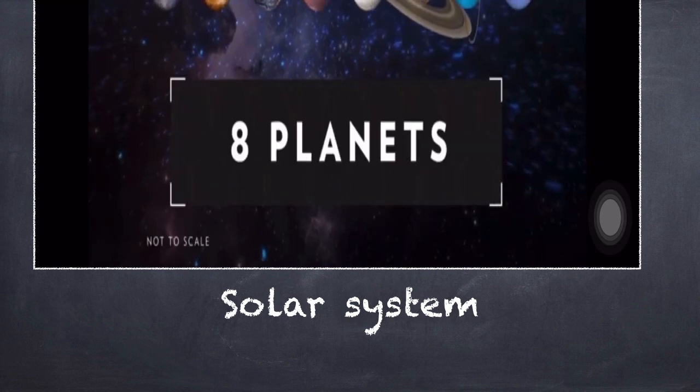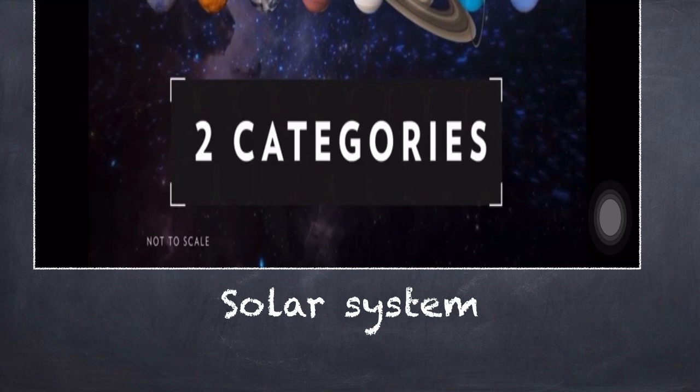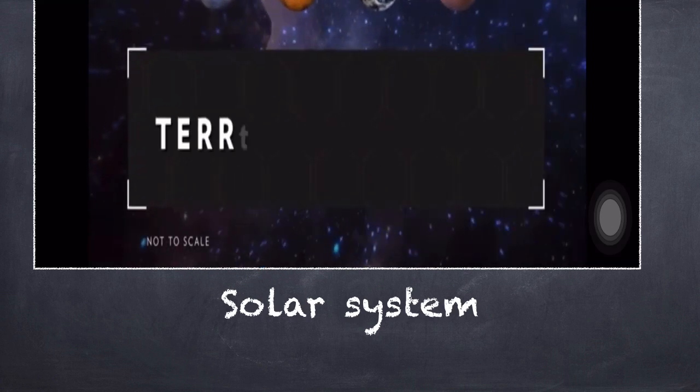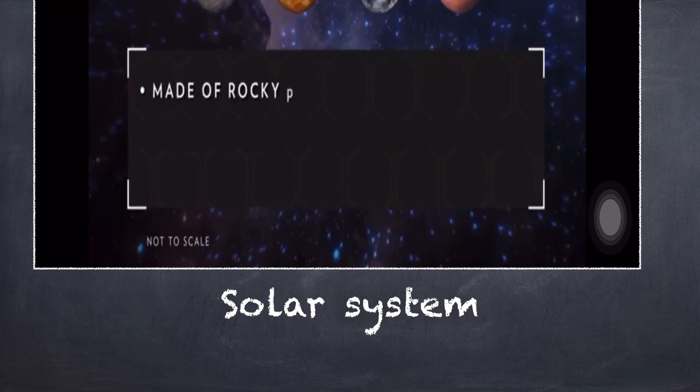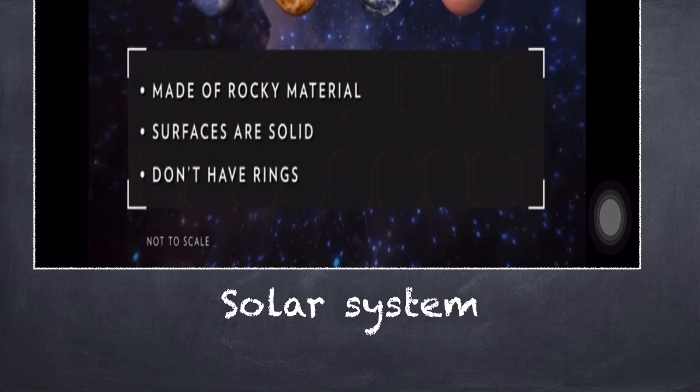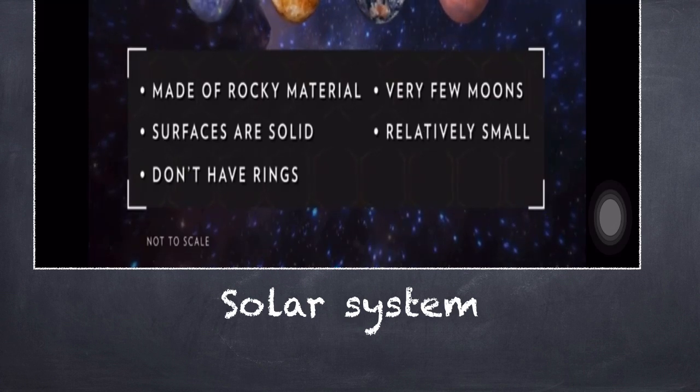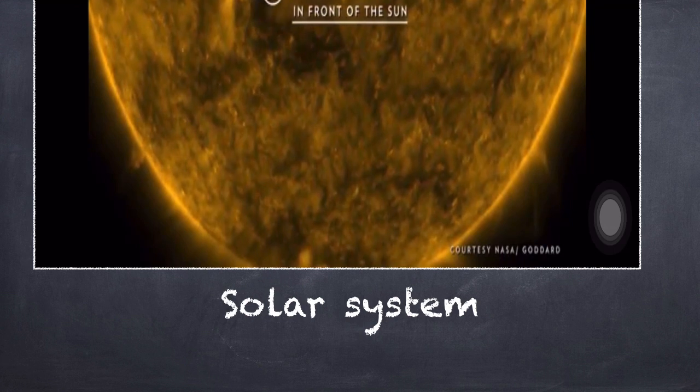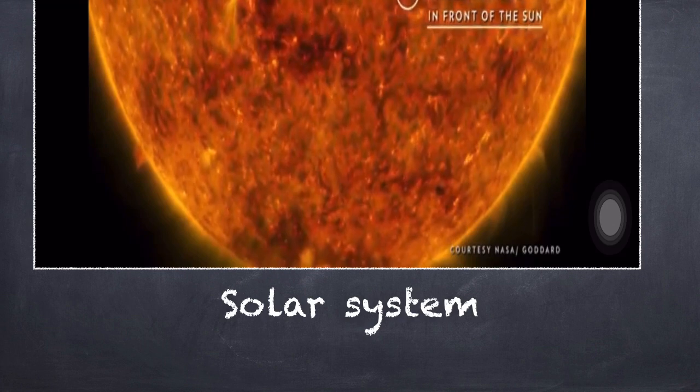Revolving around the Sun are eight planets. The planets are divided into two categories based on their composition: terrestrial and Jovian. Terrestrial planets, including Mercury, Venus, Earth, and Mars, are primarily made of rocky material. Their surfaces are solid, they don't have ring systems, they have very few or no moons, and they are relatively small. The smallest and closest to the Sun is Mercury, which has the shortest orbit in the solar system at about three Earth months.